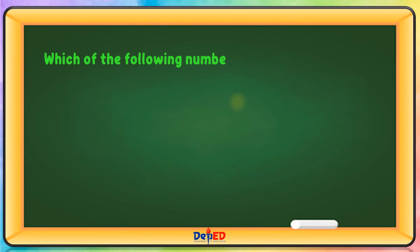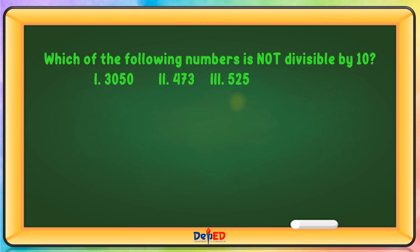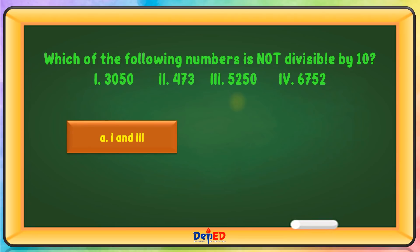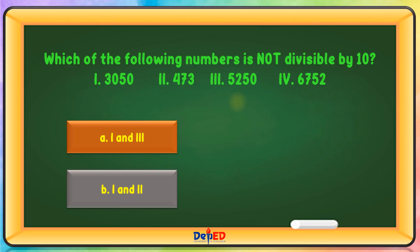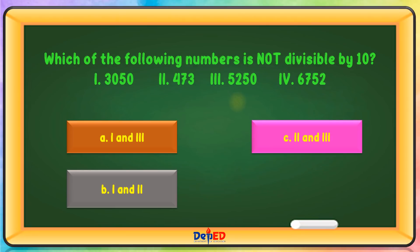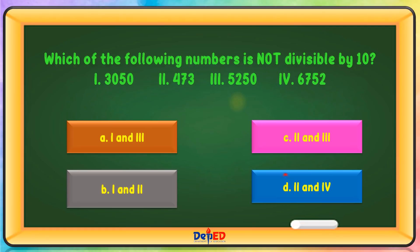Which of the following numbers is not divisible by 10? A. 3,050, B. 473, C. 5,250, D. 6,752. The correct answer is D.